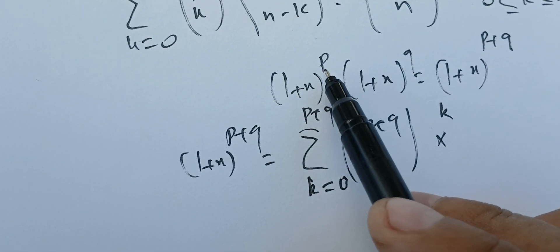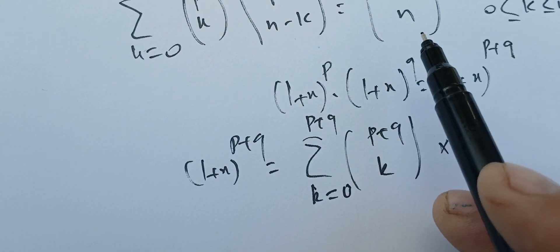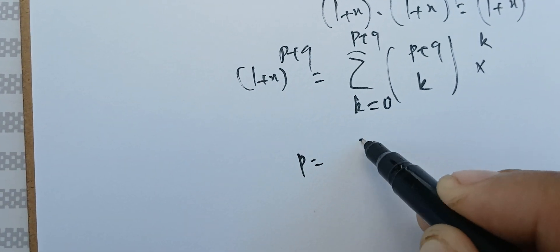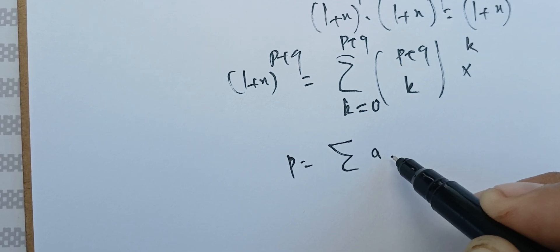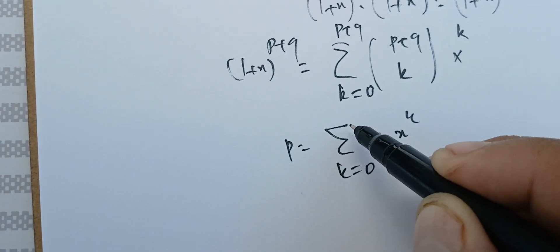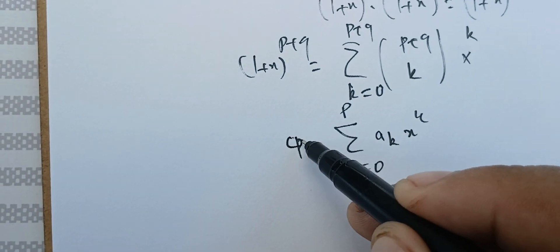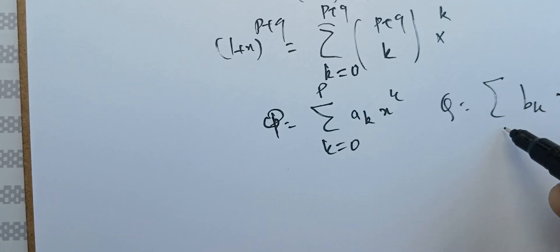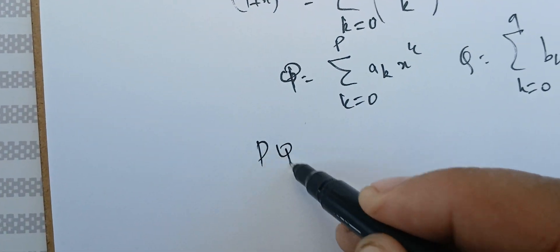Next we have two polynomials, one of degree p and the other of degree q — remember that p and q are positive integers. Let's say P is the sum of a_k x^k for k from 0 to p, and Q is the sum of b_k x^k for k from 0 to q.